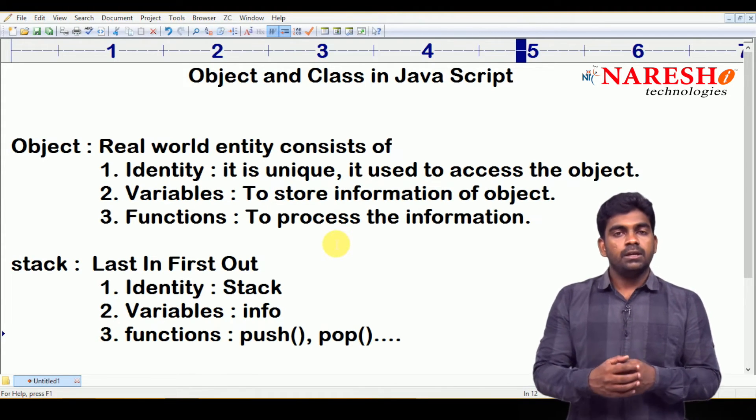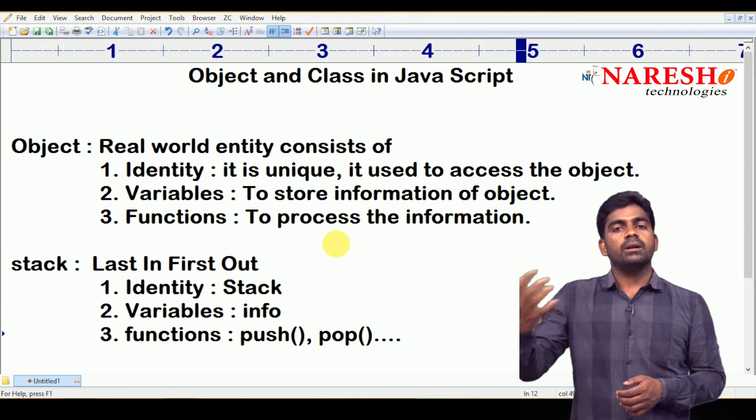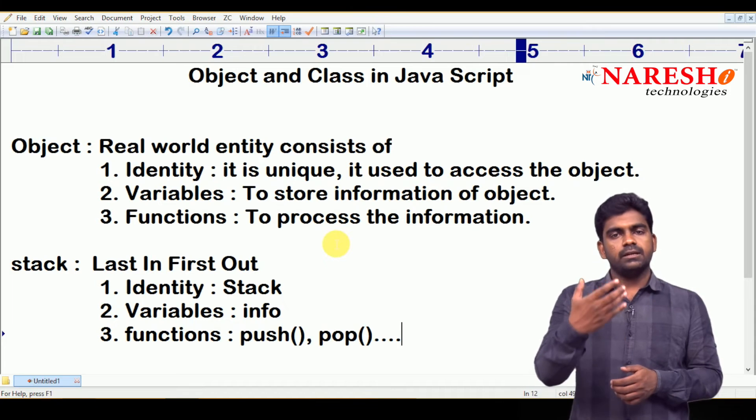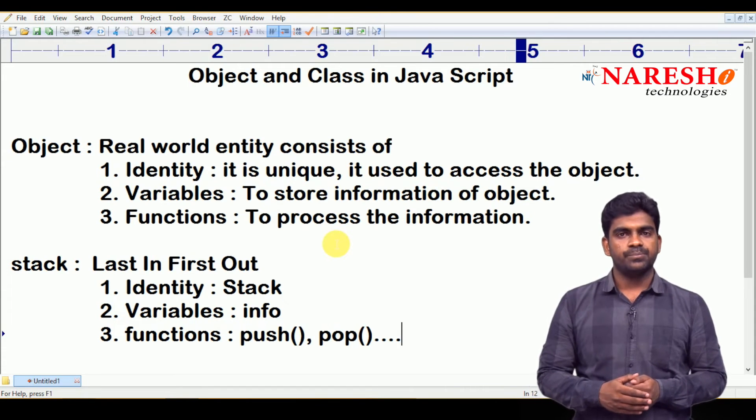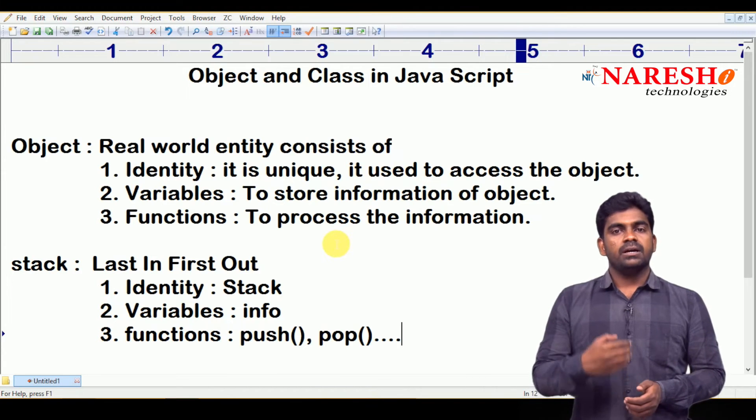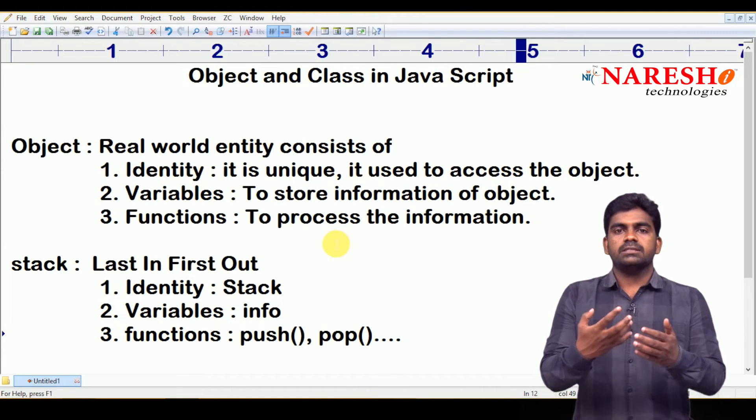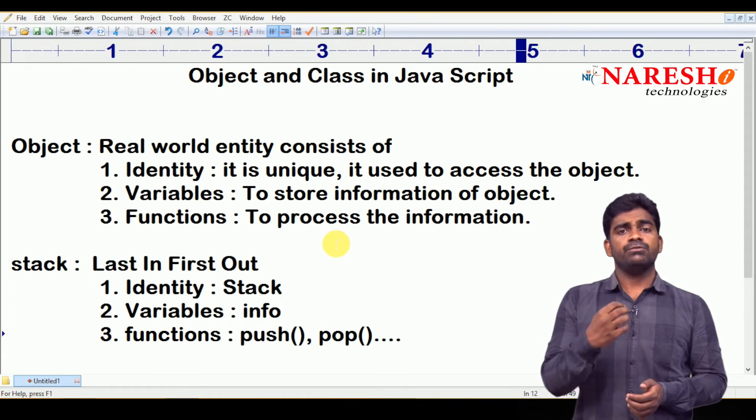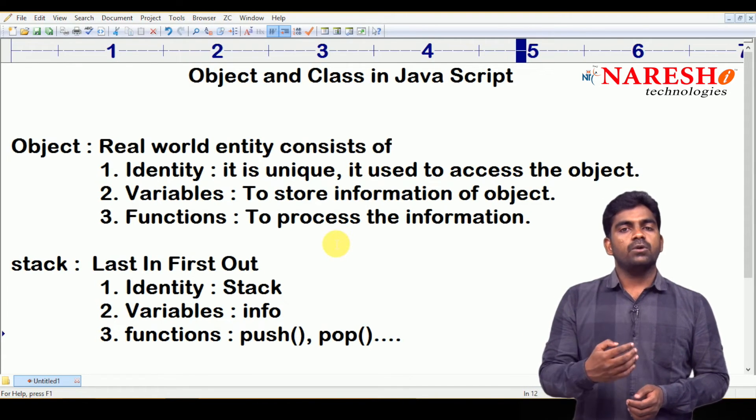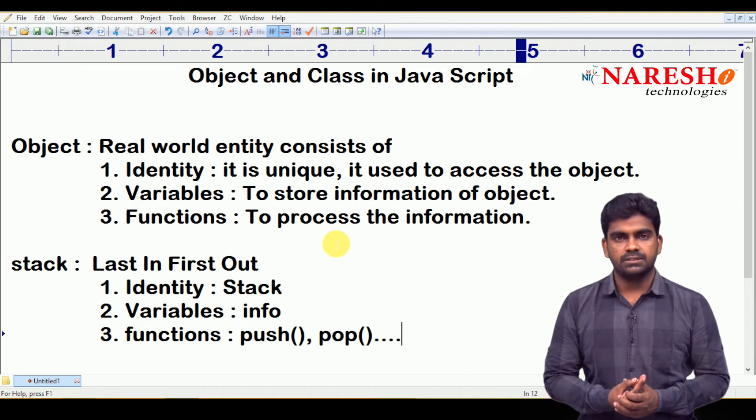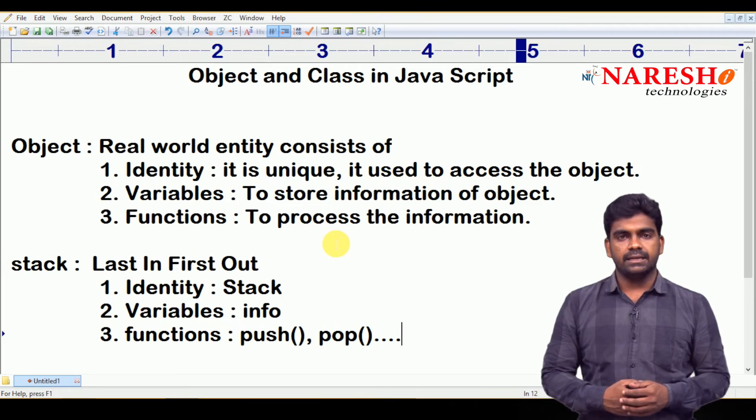Generally, if you think, you can understand the things programmatically easily. First, a general approach - you can take account holder only. Identity - unique identity is account number. A set of variables means what? Just account holder name, balance and all the other things. Functionality - using your account, what all the operations you are performing comes under functions.